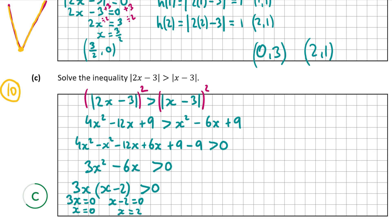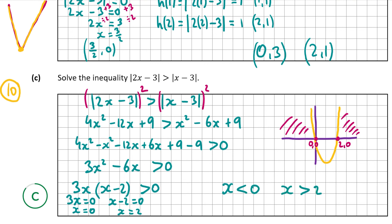Since we need an inequality in the answer, I'll draw a graph of the positive quadratic 3x(x minus 2). The parabola crosses the x-axis at (0, 0) and (2, 0). We need where the function is greater than zero — that is, above the x-axis — which occurs to the left of 0 and to the right of 2. So the answer is x less than 0 or x greater than 2. For values between 0 and 2 the function is below zero, which is not what we want. That's our answer for part C and the end of the video — thank you very much for watching!